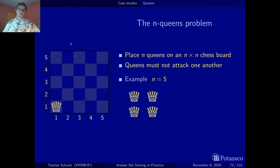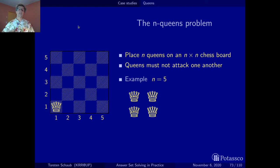For the second queen, to be placed in the second row, this position is blocked by a horizontal attack and this position is blocked by a diagonal attack. So we have three alternatives. Since it's about avoiding attacks, I put the second queen as far away as possible.